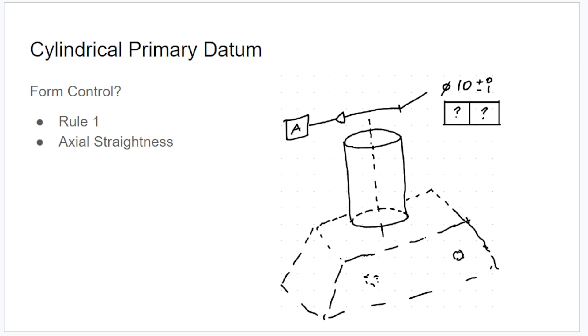Number two, fairly forgiving as well, axial straightness. And number three, for when you have a lot of concern with the surface of the part, cylindricity.